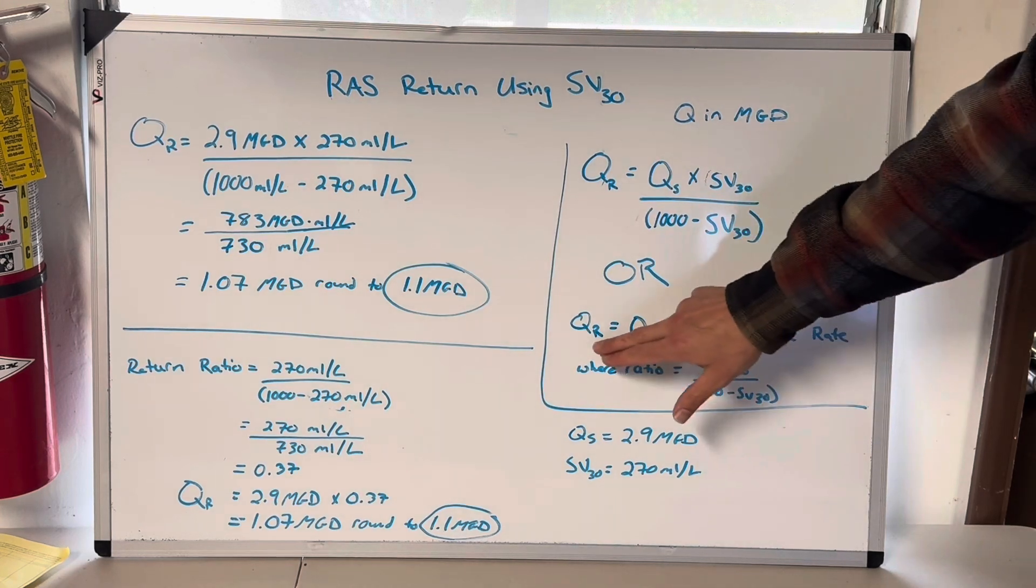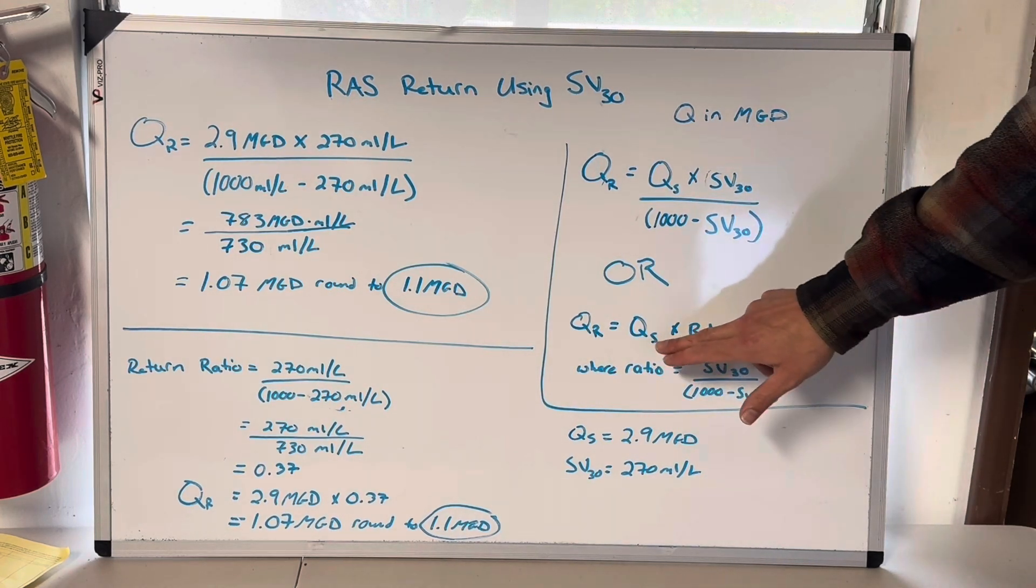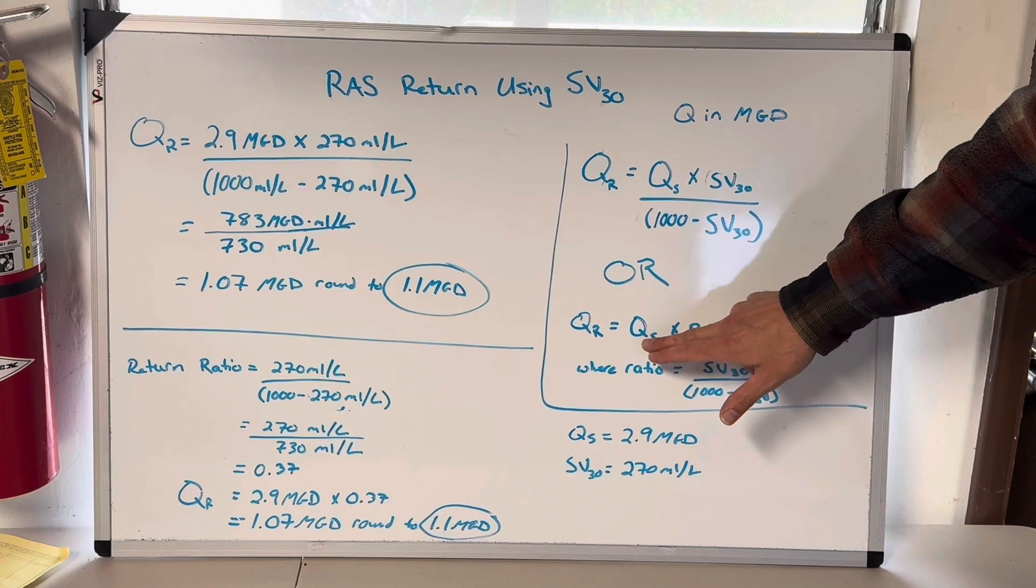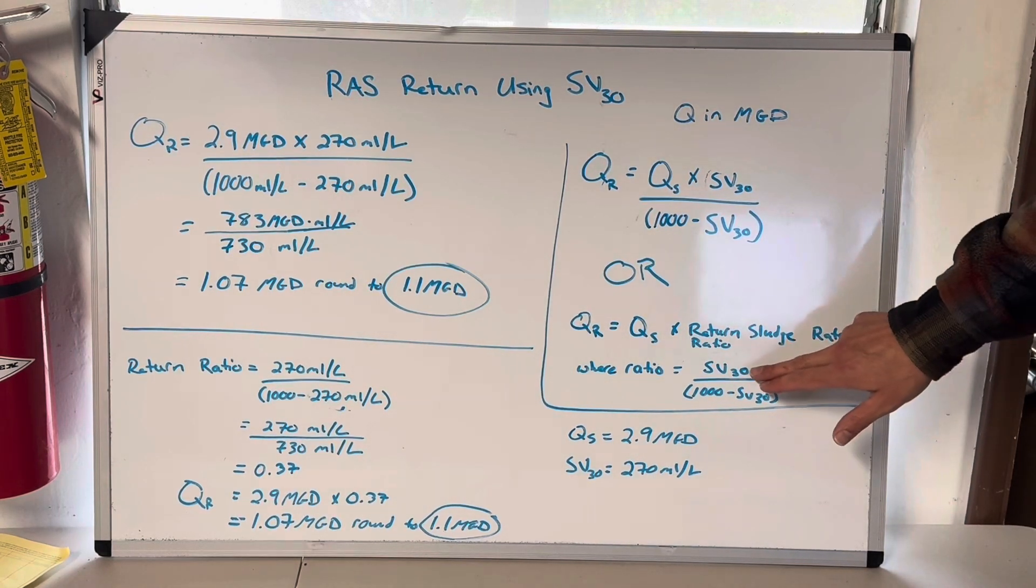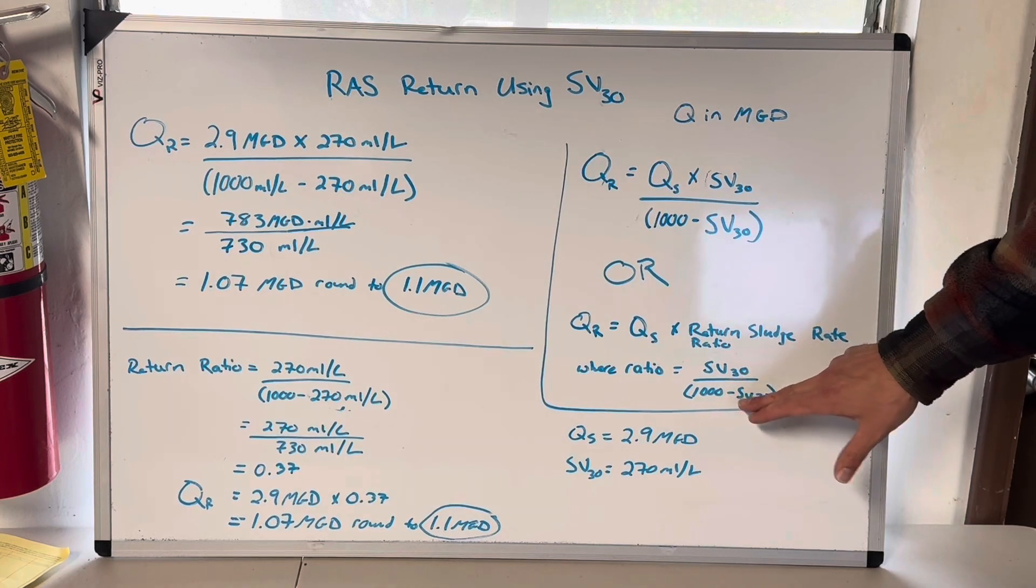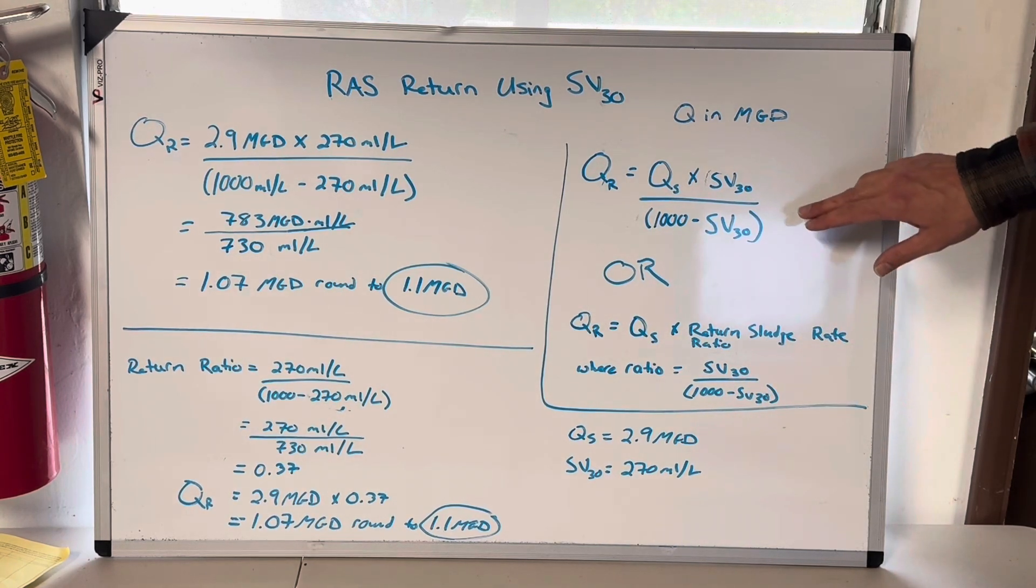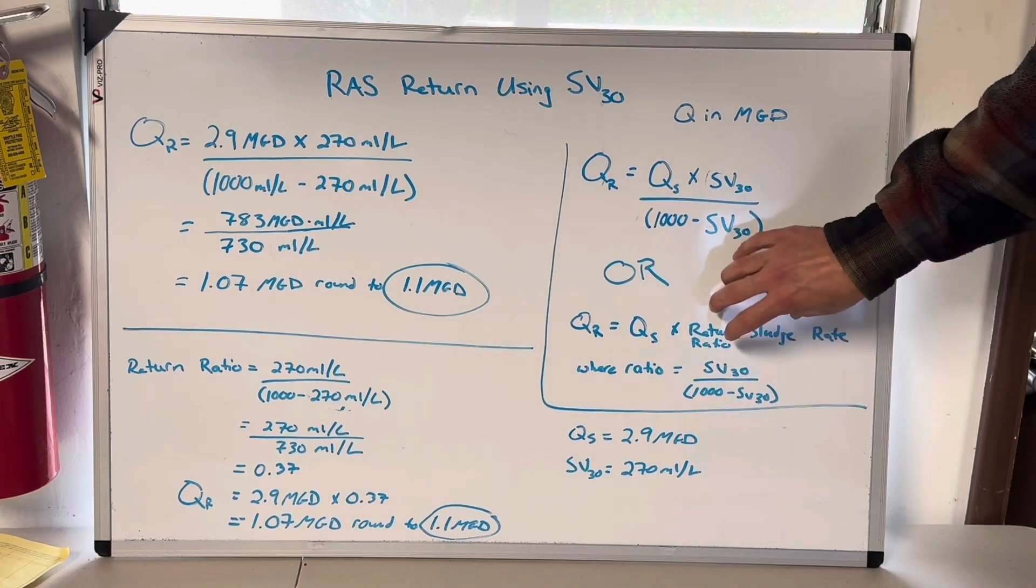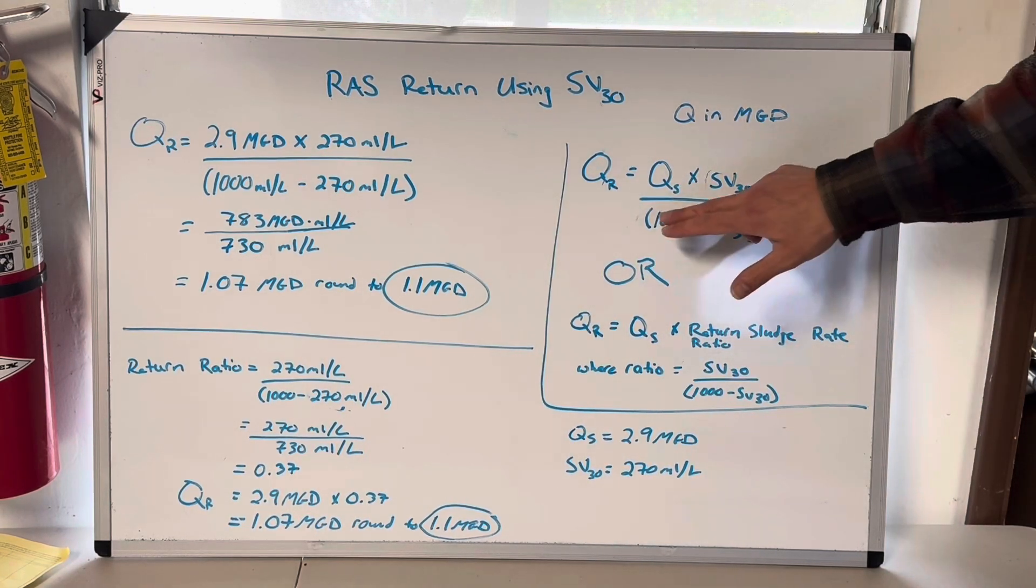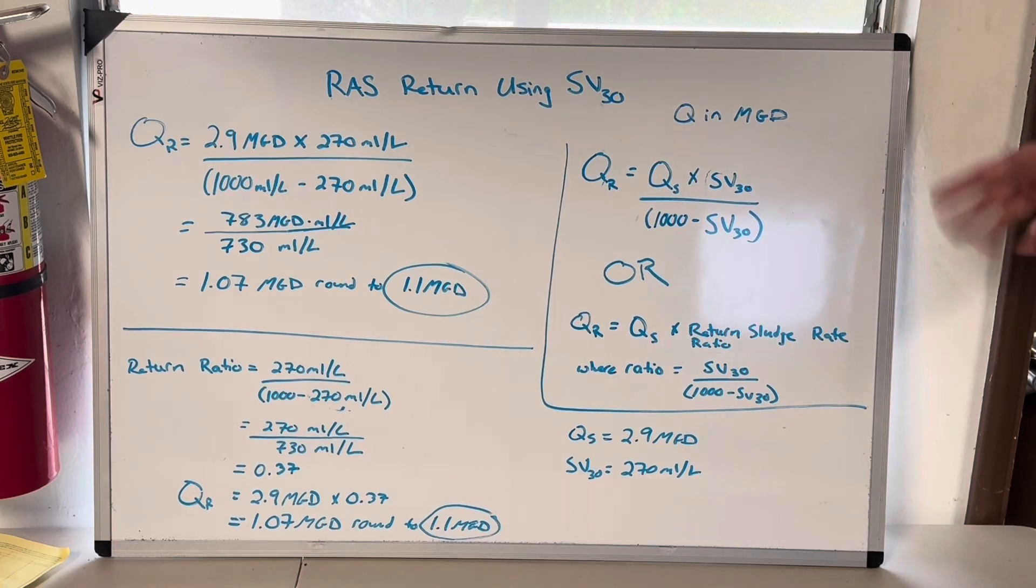The other way to write this is your return rate in MGD is your secondary influent flow in MGD times your return sludge rate ratio, which is the ratio is SV30 divided by 1000 minus SV30. Well, that's exactly that, isn't it? We're just doing this first and then we're multiplying instead of multiplying, subtracting, and then dividing. It just depends on your flavor of the day and what you feel like doing.